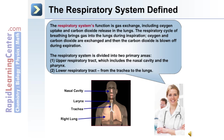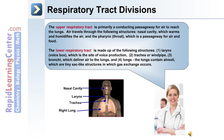The respiratory system is divided into two primary areas: the upper respiratory tract, which includes the nasal cavity and the pharynx, and the lower respiratory tract, from the trachea to the lungs. The upper respiratory tract is primarily a conductive passageway for air to reach the lungs. Air travels through the nasal cavity, which warms and humidifies the air, and the pharynx, which is a passageway for both air and food.